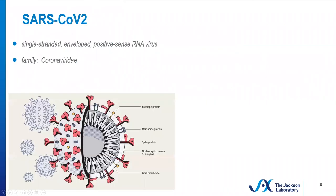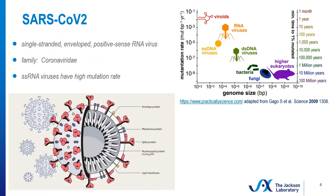A little bit about SARS-CoV-2. It's a single-stranded, enveloped, positive-sense RNA virus and a member of the family coronaviridae. The RNA viruses have the highest mutation rate of any pathogen group generally recognized as infecting humans, as you can see here.